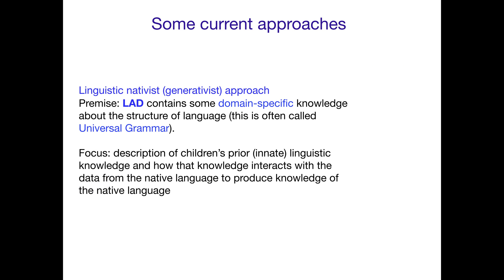This is in line with what's sometimes called the linguistic nativist or the generativist approach, which we'll talk about when we discuss theoretical viewpoints in a different podcast. The premise is that the Language Acquisition Device, the LAD, contains some domain-specific knowledge — that is, knowledge specifically about language. This language acquisition device contains special knowledge about the structure of language, and this is often called universal grammar, because the structure of a language system is sometimes referred to as a grammar.